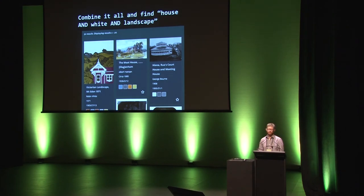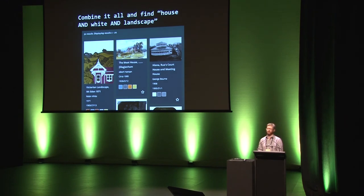We could then search on several of these elements together: the subject keywords, the named colors, the image orientation. Here I've searched for 'house', 'white', and 'landscape', and all of these results are missing at least one of those elements in the original catalog record.